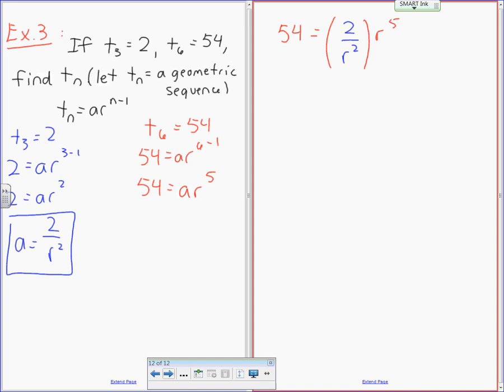Most people, please ask and be brave. Kylie, what is 2 times R to the fifth divided by R squared equal to, please? 2R cubed. 2R cubed, good.